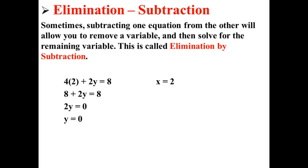So, for our system of equations, the solution is the ordered pair (2, 0), where x is equal to 2 and y is equal to 0. And that is how you perform elimination by subtraction.